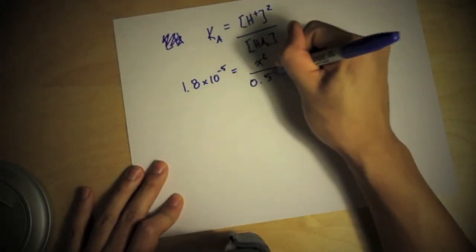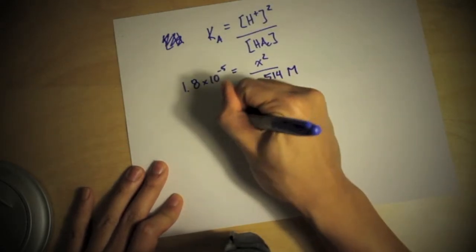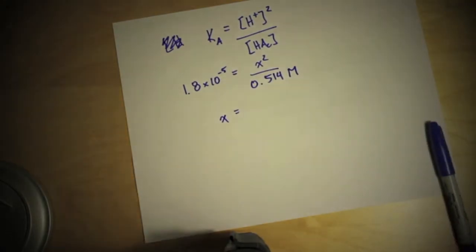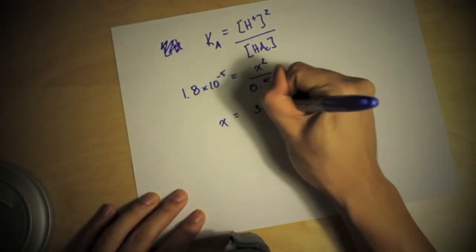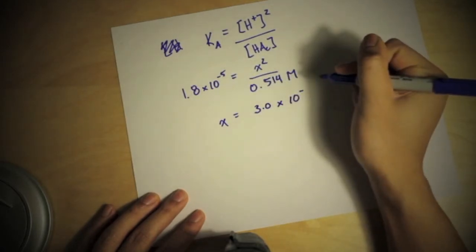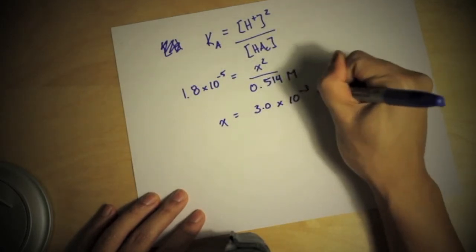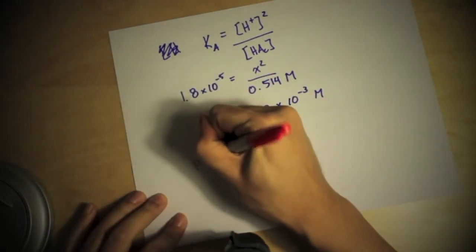Plug some stuff into a calculator and you're going to find that x is equal to about 3.0 times 10 to the negative 3 molar.